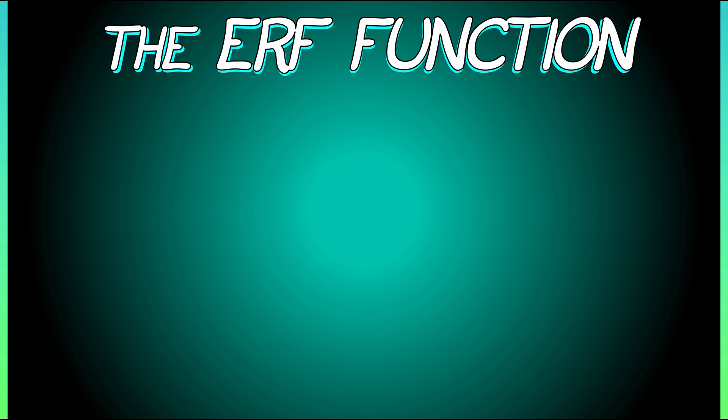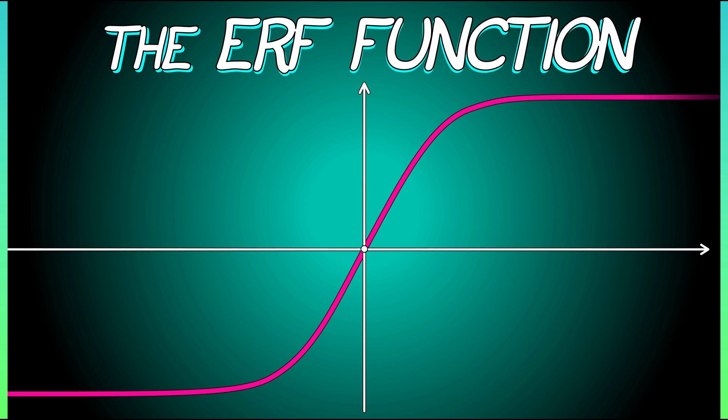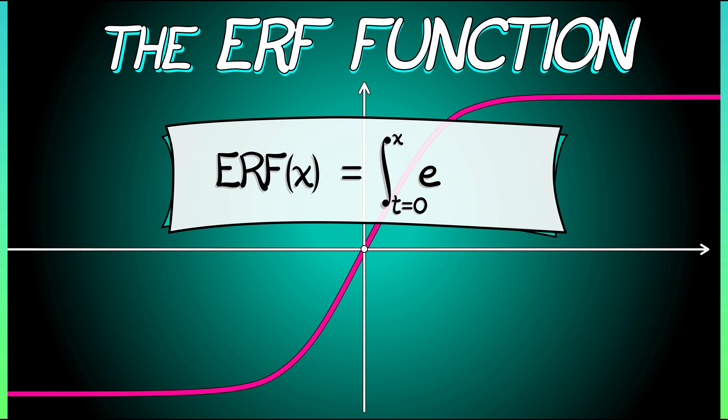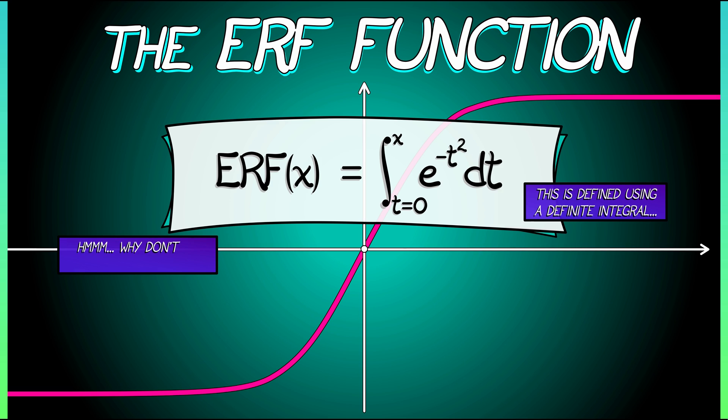As does the ERF function. ERF of x is a sigmoid function with a particular S sort of shape. It has the formal definition as the integral, as t goes from 0 to x, of e to the minus t squared dt. So, the function itself is defined in terms of a definite integral. Now, you may be wondering to yourself, why don't we just do that integral? Why do we have to define it in terms of this? Why not just integrate this and then there we go? That's ERF of x.